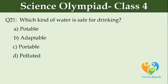Which kind of water is safe for drinking? Option A: Potable, Option B: Adaptable, Option C: Potable, Option D: Polluted.